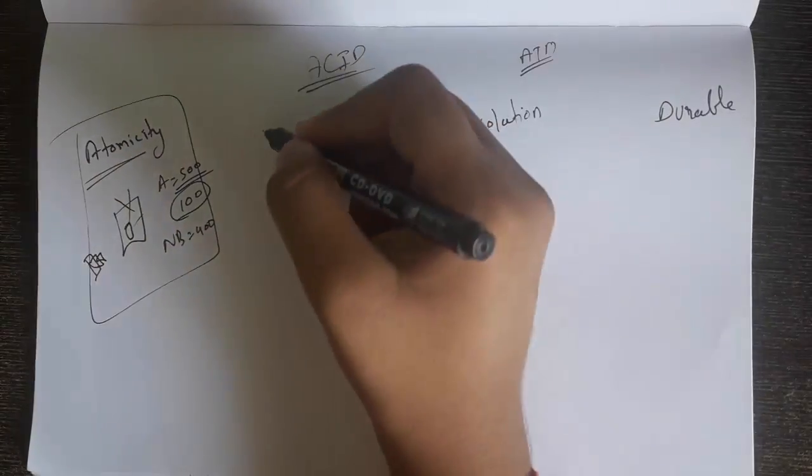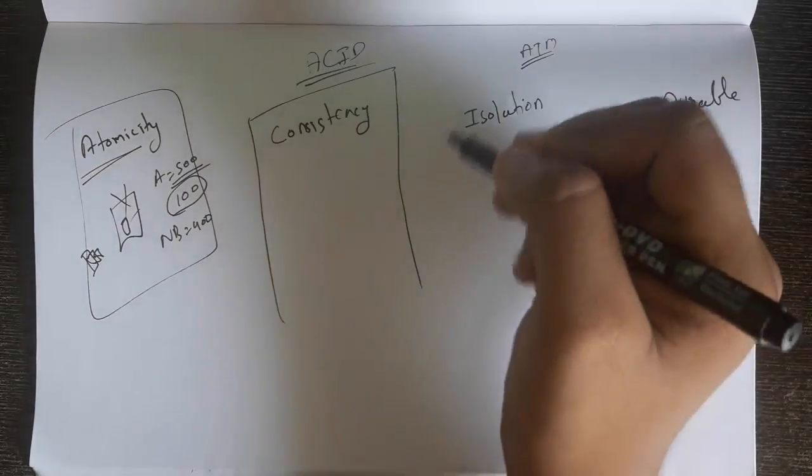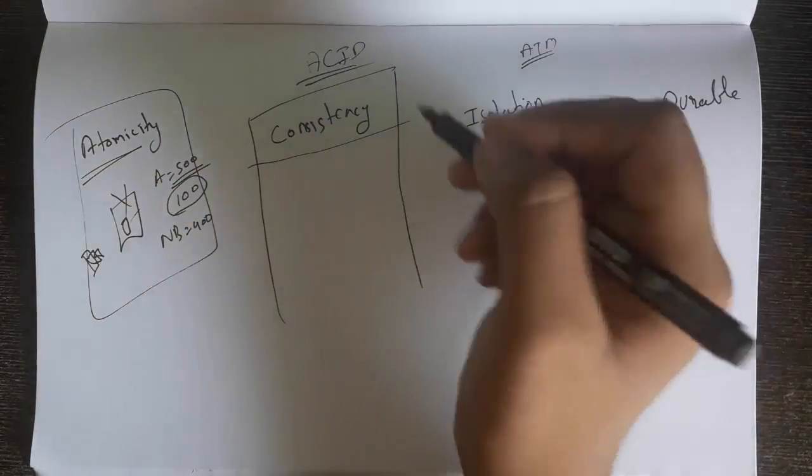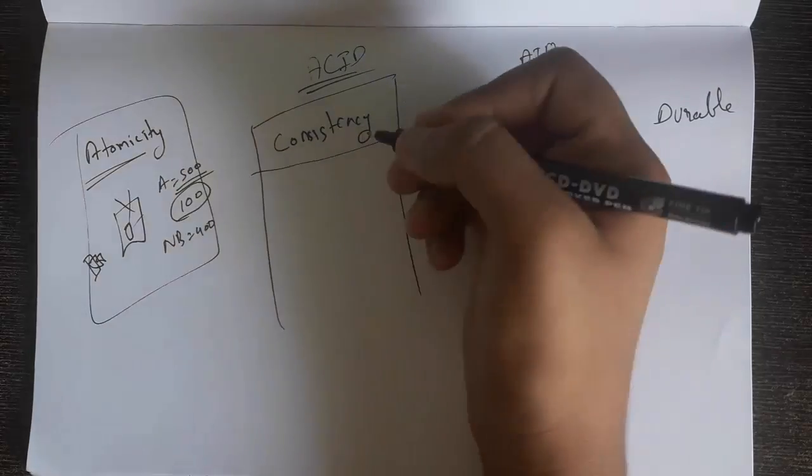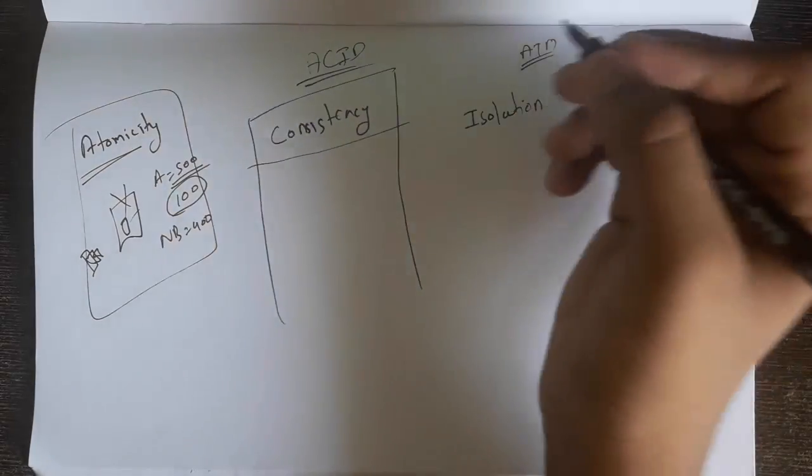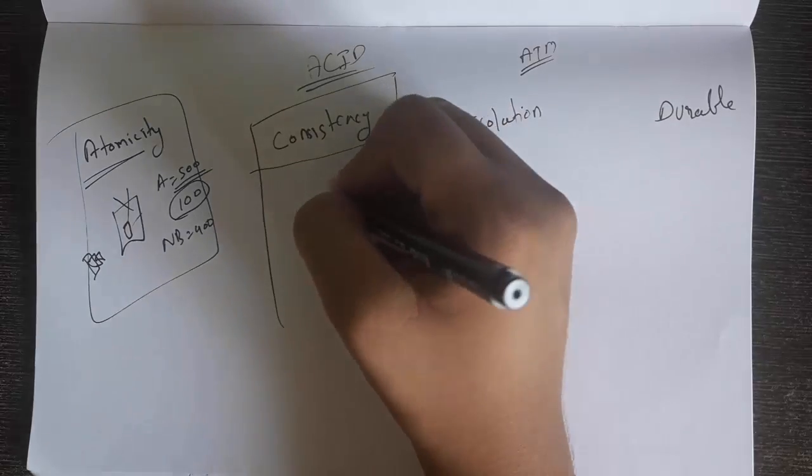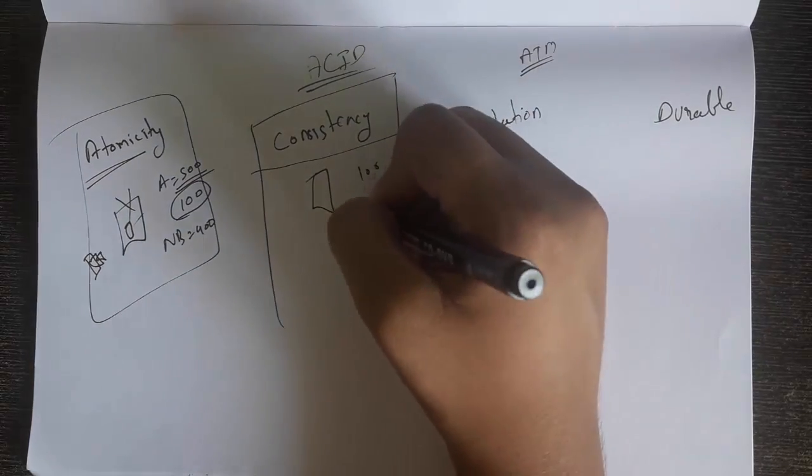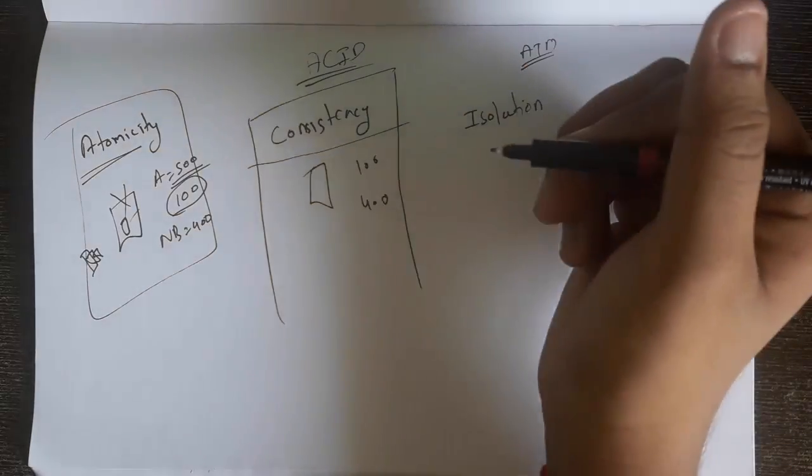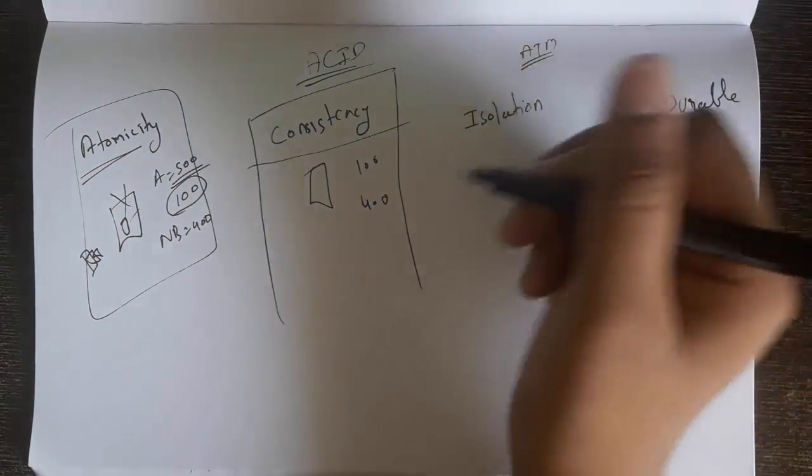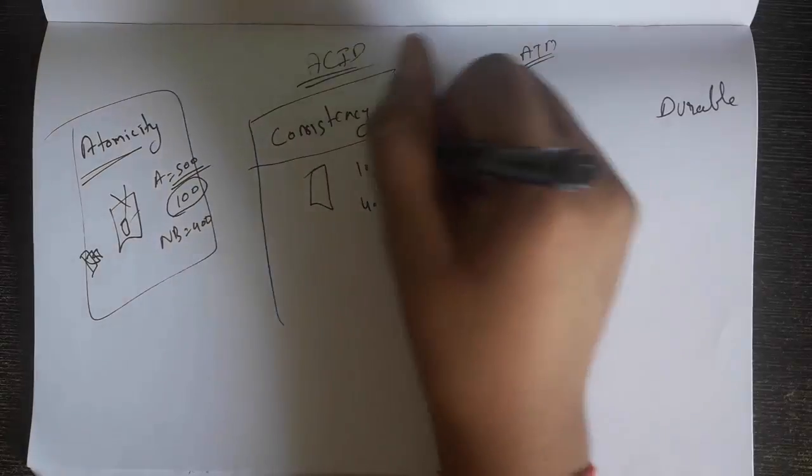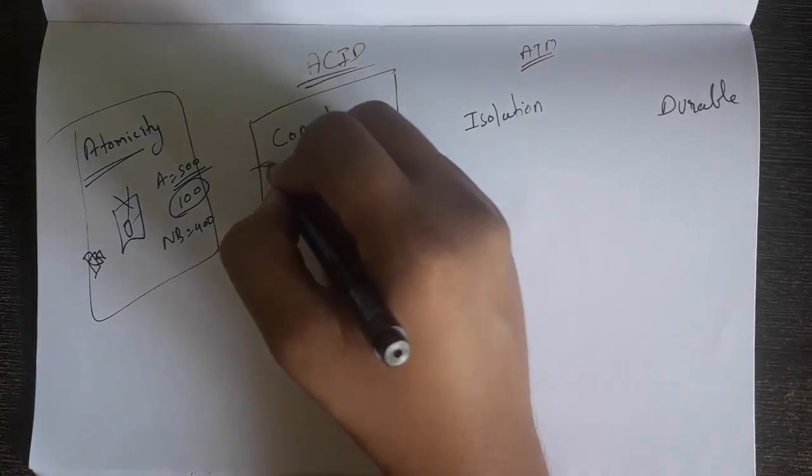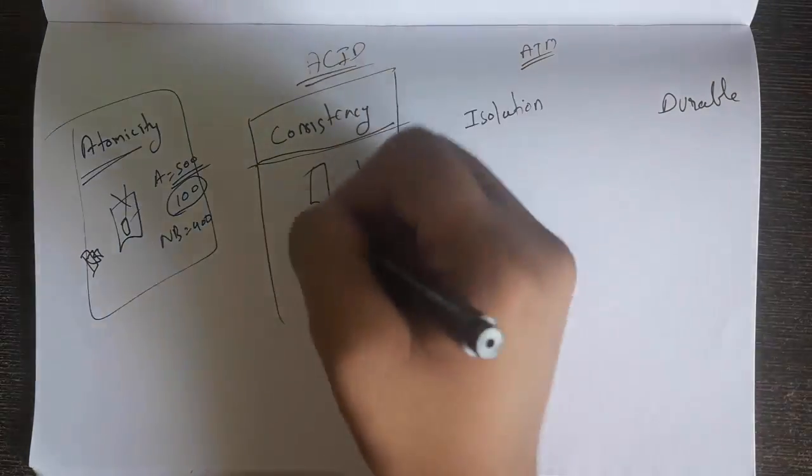Now what is consistency? The consistency property can be understood by: suppose in the ATM machine, if the ATM was working properly right before the transaction, I withdrew the 100 rupees and now the current balance is 400. Still the ATM is working in the consistent state, means the ATM is reliable and the transaction's reliability can be maintained. So this is called consistency.